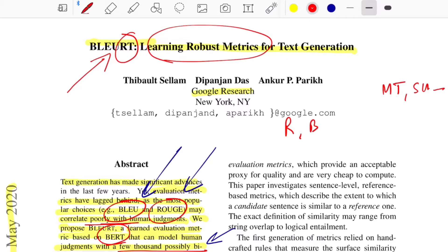These are objective, inexpensive metrics which are fast to calculate, unlike looping in a human to judge how correct the generated text is, which is pretty expensive and time-consuming. METEOR is something people also use for evaluating translation systems.